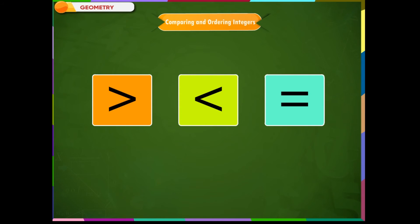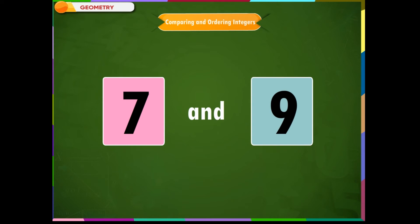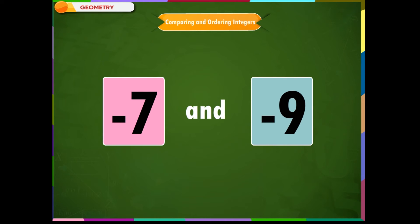In math, to compare any two numbers we use the signs greater than, less than, or equal to. To compare positive integers, for example, to compare 7 and 9, we write 7 is less than 9. To compare negative numbers, for example, to compare minus 7 and minus 9, we write minus 7 is greater than minus 9.